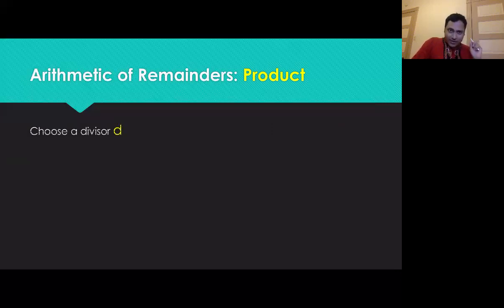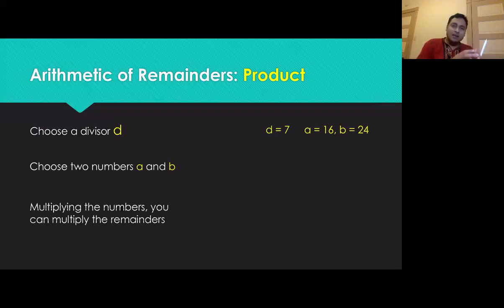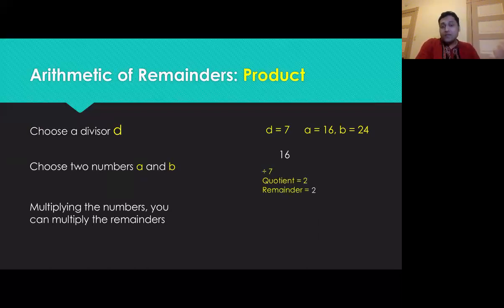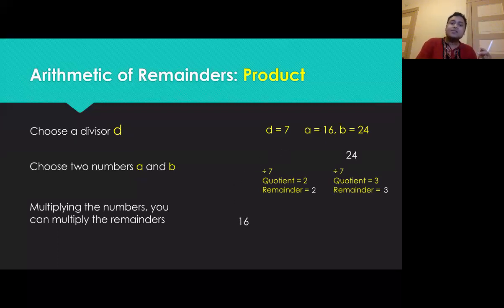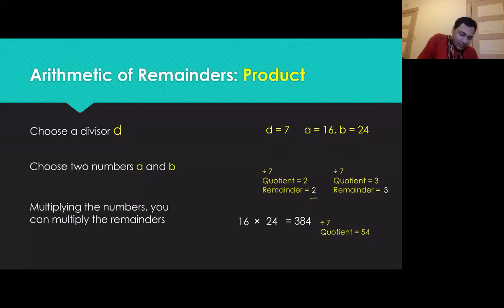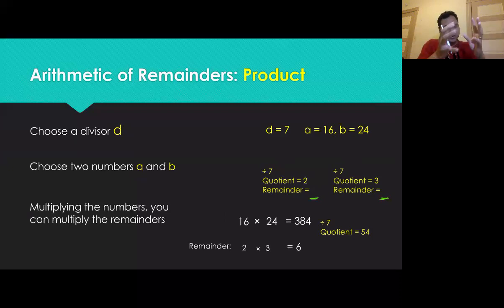Same setup: divisor D is seven, numbers are 16 and 24. If you multiply the numbers, the remainders get multiplied. 16 divided by seven gives remainder two; 24 divided by seven gives remainder three. Multiplying 16 and 24 gives 384. Dividing 384 by seven gives quotient 54 with remainder six — which is two times three, the product of the two initial remainders.